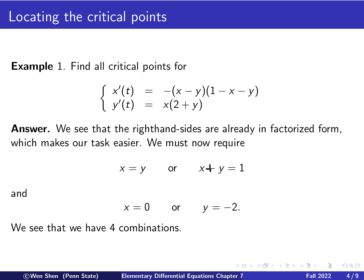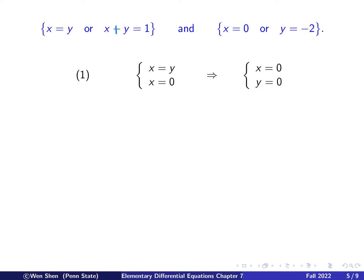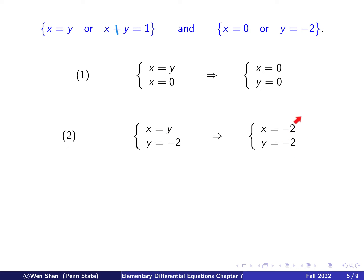We take a closer look at all four combinations. The first combination takes x equals y and x equals zero: then x is zero, and from that equation y also equals zero, so (0, 0) is a critical point. The second critical point uses x equals y combined with y equals negative two: y is negative two, and since x must equal y, x is also negative two, giving critical point (−2, −2).